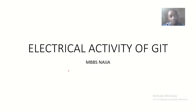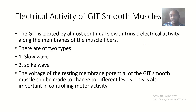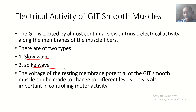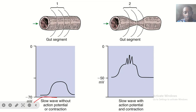Today we'll be talking about the electrical activity of the gastrointestinal tract — specifically the electrical activity of the GI smooth muscles. The GI tract is characterized by almost continual slow intrinsic electrical activity along the membranes of the muscle fibers. This excitation comes in two types: the slow wave excitation and the spike wave excitation. The voltage of the resting membrane potential of gastrointestinal smooth muscles can change to different levels, which is important in controlling motor activities of the GI tract.